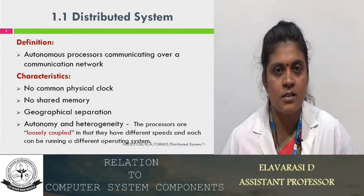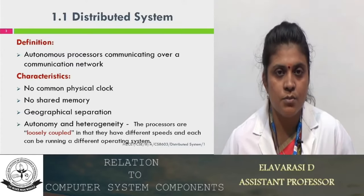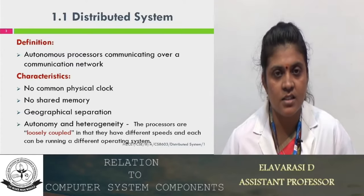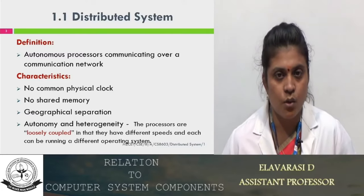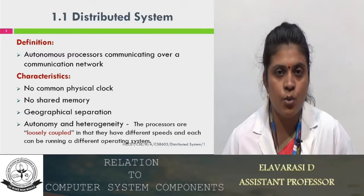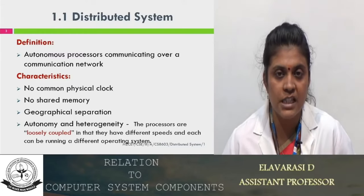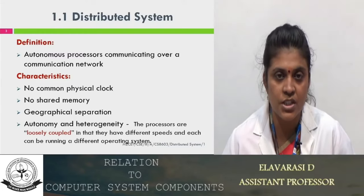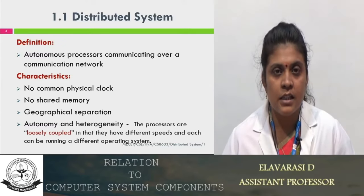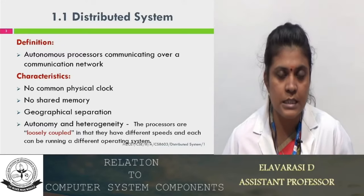From the basic characteristics of a distributed system, we are going to list the basic characteristics. The first one is no common physical clock. What is meant by no common physical clock? Here it means that each processor connected over a communication network has its own physical clock, but the entire system does not have any common physical clock. There is no global clock.